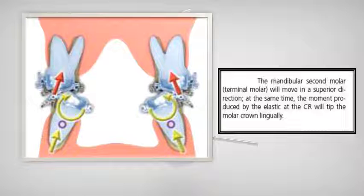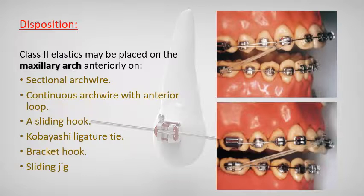The mandibular second molar will move in a superior direction, and at the same time, the movement produced by the elastic at the center of resistance will tip the molar crown lingually. Class 2 elastics may be placed on the maxillary arch anteriorly on sectional arch wire, continuous arch wire with anterior loops, sliding hook, Kobayashi ligature tie, bracket hook, and sliding jig.